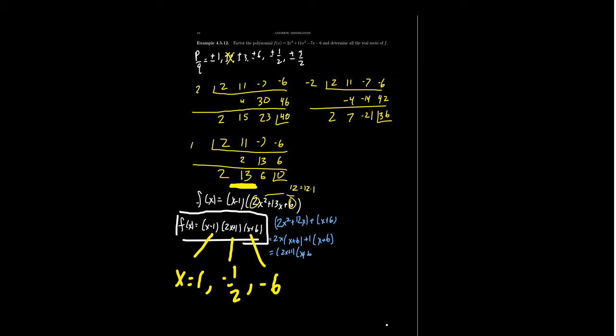Whenever you find a root, it's better to use the depressed polynomial because it speeds up the factorization process dramatically. The rational roots theorem is a critical tool to help us factor and solve polynomial equations. We had a list of 12 numbers to try — worst case, 12 synthetic divisions. But we can actually hone in on the roots much faster, and we'll talk about that in the next lecture so we don't have to try all 12 possibilities.